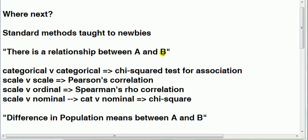If we've got scale and scale, two scale things, we use something called Pearson's correlation. If I have scale versus ordinal, we use something called Spearman's rho, and that's correlation as well.